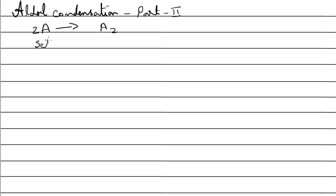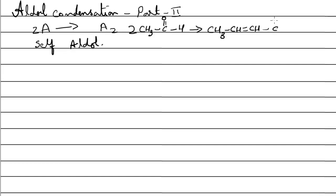This is known as self-aldol, because you are taking the same molecule and doing the condensation with itself. For example, in the previous video we took acetaldehyde, and two molecules of acetaldehyde condensed to give an alpha-beta unsaturated aldehyde. That is called the self-aldol.